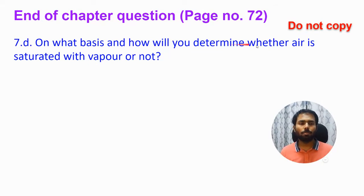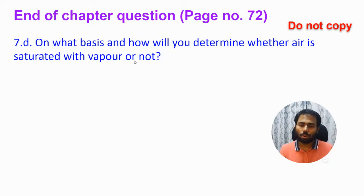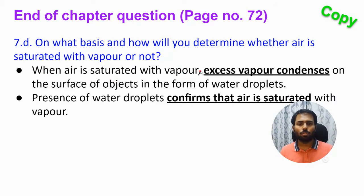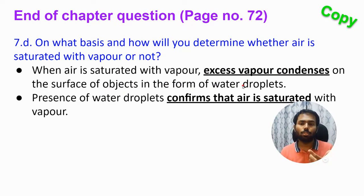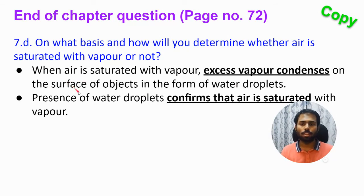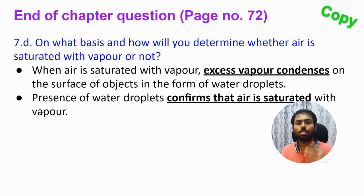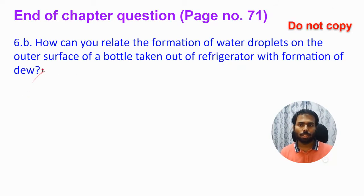End of chapter question: on what basis and how will you determine whether air is saturated with vapor or not? The answer is simple: when the air is saturated with vapor, excess vapor condenses on the surface of objects in the form of water droplets. So the presence of water droplets on surfaces around you confirms that the air is saturated with vapor.